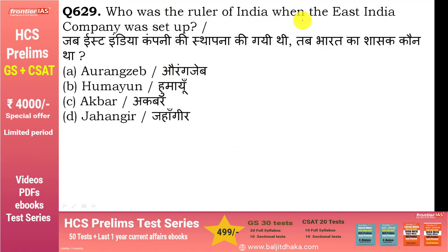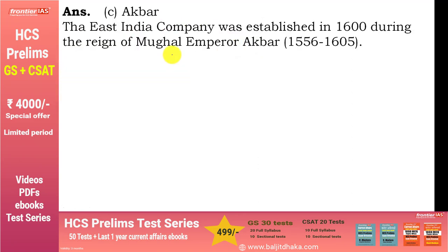Who was the ruler of India when the East India Company was set up? Answer है Akbar (option C)। East India Company around 1600 AD में establish हुई थी। Akbar का reign 1556-1605 था। Akbar की death dysentery से हुई थी और उसी से Shivaji की भी death हुई थी।